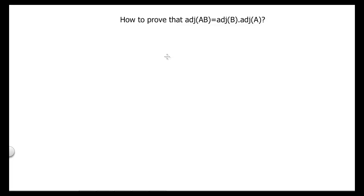In this video we will learn how to prove that adjoint of AB is equal to adjoint of B times adjoint of A. Let's suppose that we have two matrices A and B, and we want to prove that adjoint of the product AB is equal to adjoint of matrix B times adjoint of matrix A.